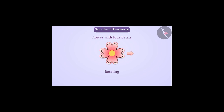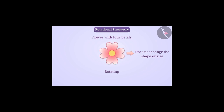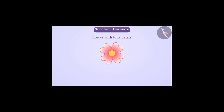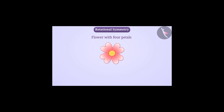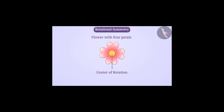Rotating does not change the shape or size of this shape. Similarly, when an object rotates, its shape and size do not change. This shape of the flower is rotating around a fixed point. In rotation, we rotate an object around a certain point which is called the centre of rotation. Here, we will show the centre of the flower as the centre of rotation of this shape.